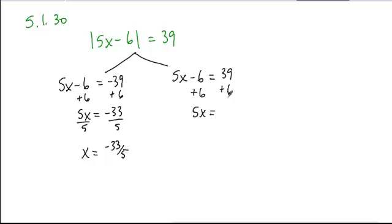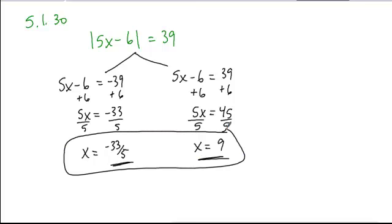isolate our 5x. That gives us 45. Divide both sides by 5, and we get our other solution: x equals 9. So those would be our two answers.